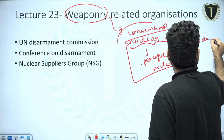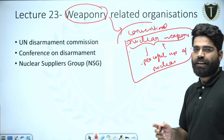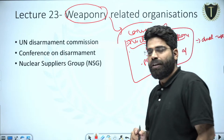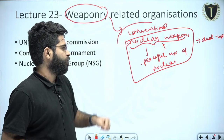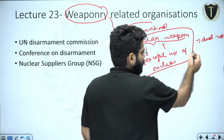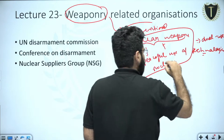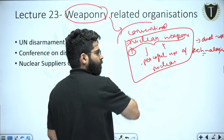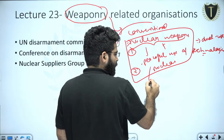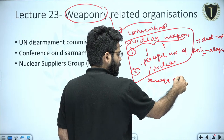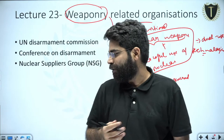Dual use technology means you can use it as a weapon and also for peaceful purposes such as energy generation. So these kind of things will be covered in the coming 2 or 3 lectures.